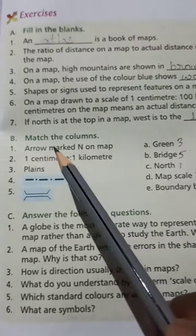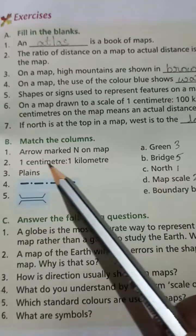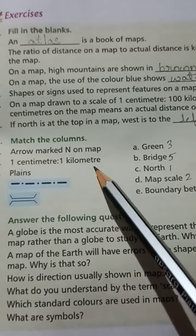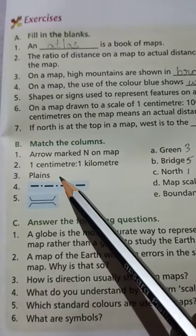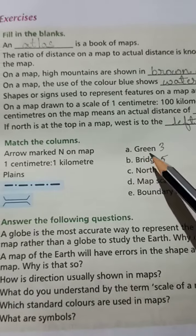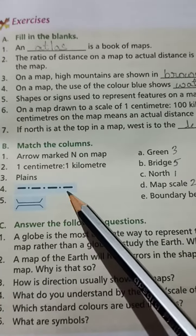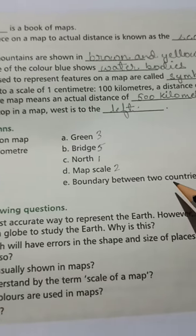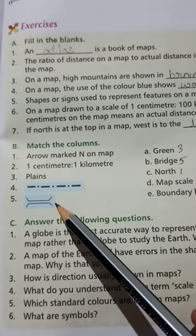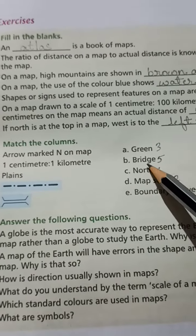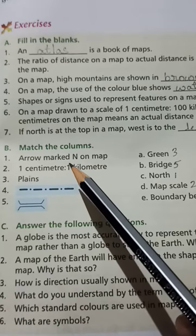So, number one: Arrow marked N on a map is C: North. Number two: One centimeter is to one kilometer is D: Map scale. Number three: Plains is A: Green. Number four: There is a dotted line is E: Boundary between two countries. And number five: There is a bridge, which is B: Bridge shown on the map.